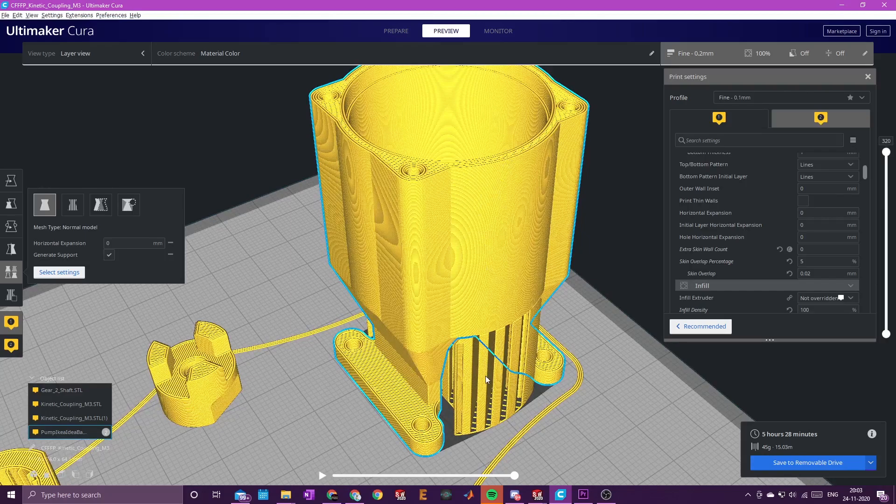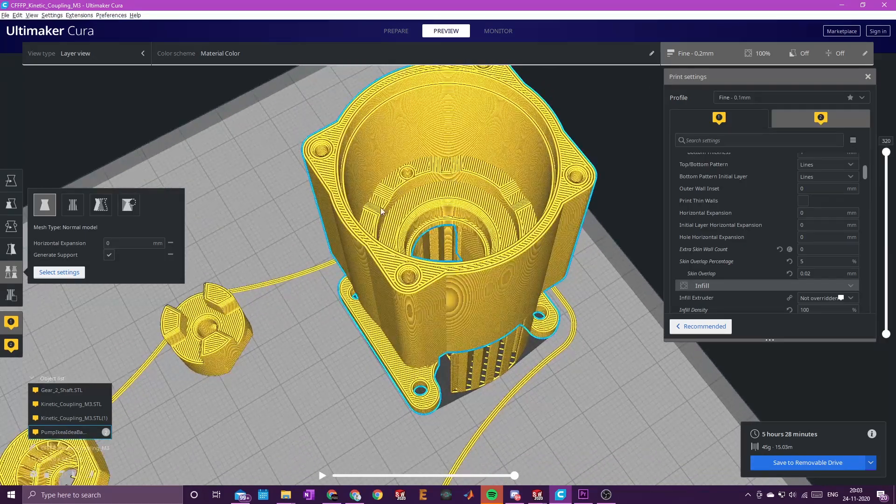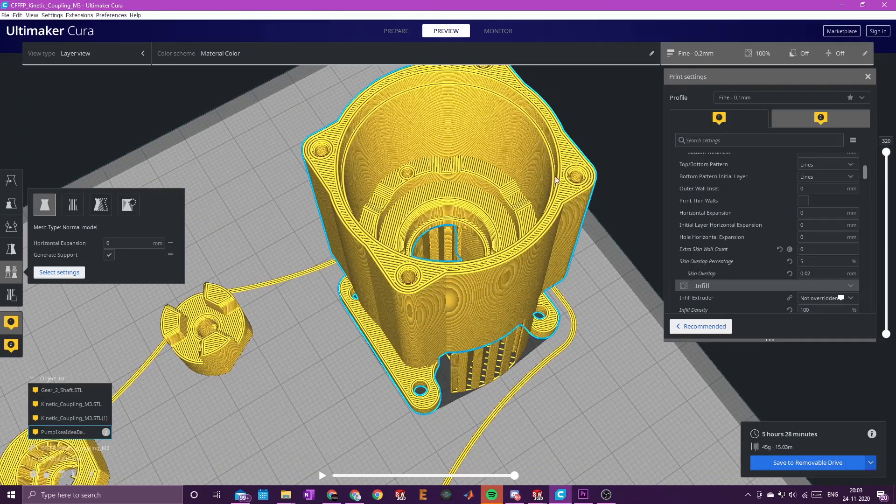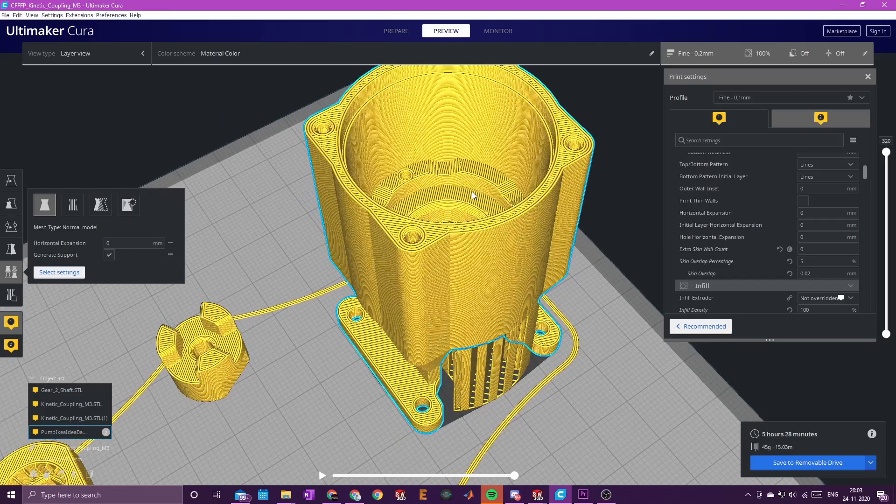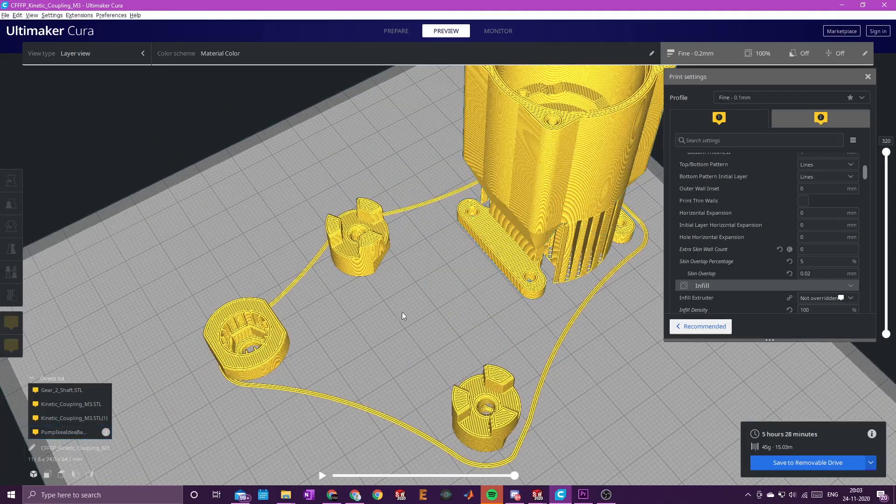You can push your part through the build plate and only print the bottom portion, so you don't waste a lot of material and can test fit your part. That's for the motor housing.